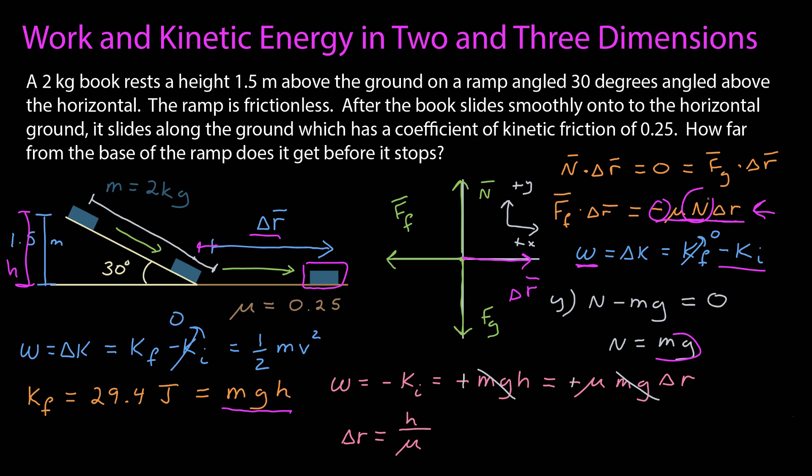And then if I solve for r by dividing both sides by mu, I get that the displacement is equal to the height divided by mu. Now the units check out because height is a length and the coefficient of friction is dimensionless. I can go ahead and plug in those numbers.